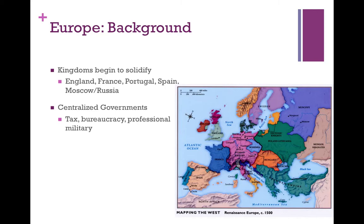We have the start of these nation-states with these kingdoms, and they have very centralized governments, which means they can tax effectively because they have a bureaucracy that helps run their country. They will develop a professional military, which allows them to hold their borders and go out and conquer new areas — and this will lead to the rise of Europe.